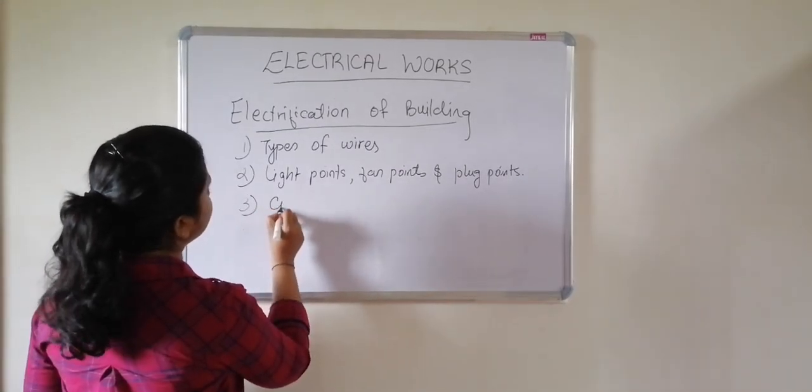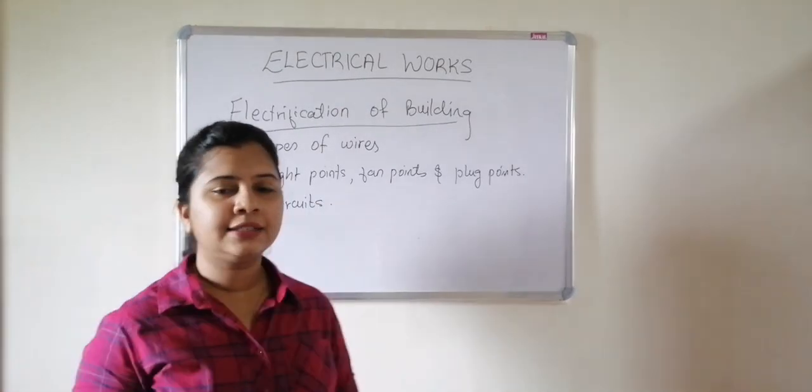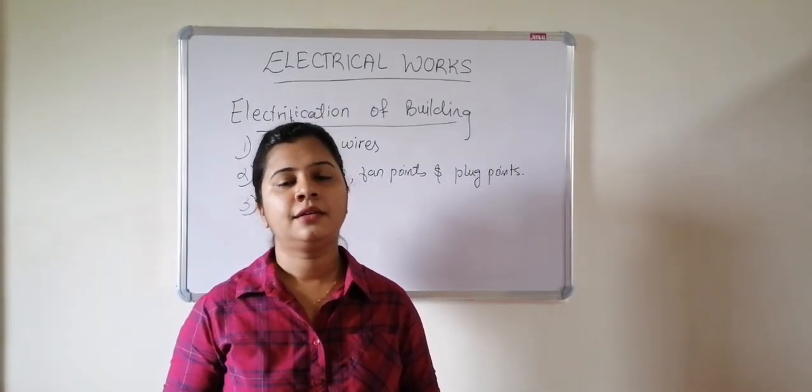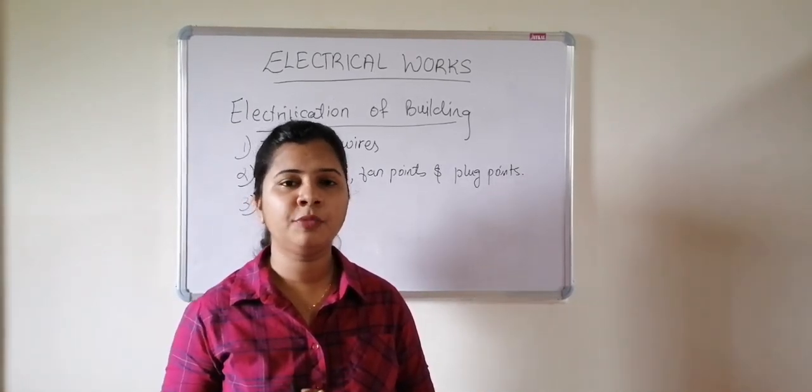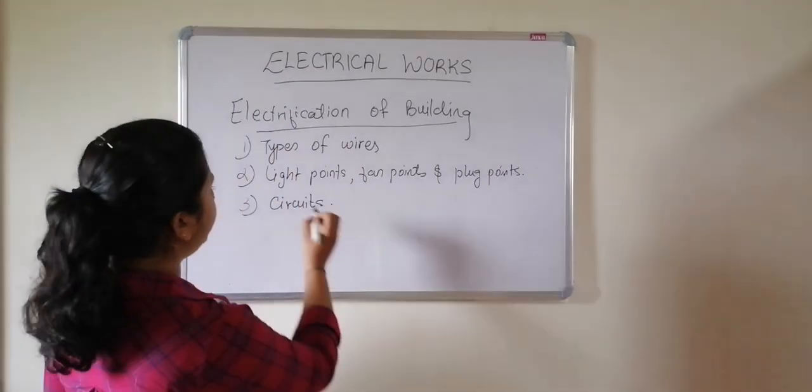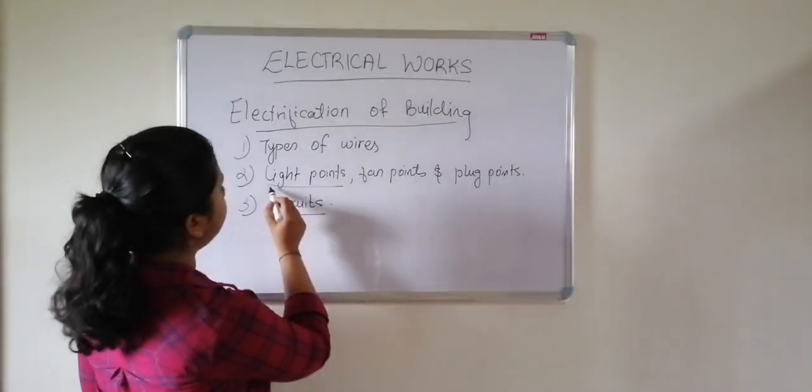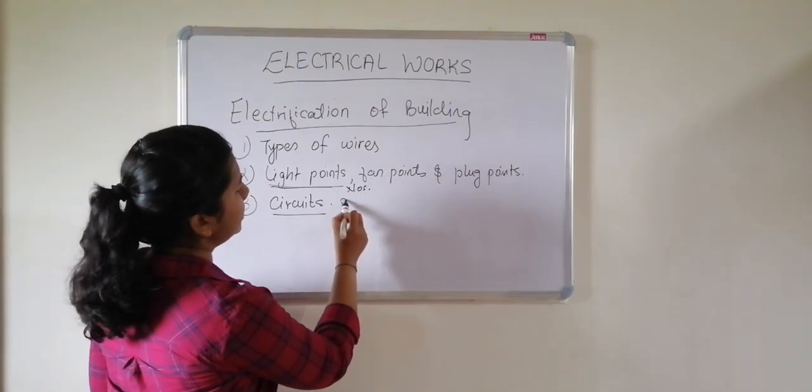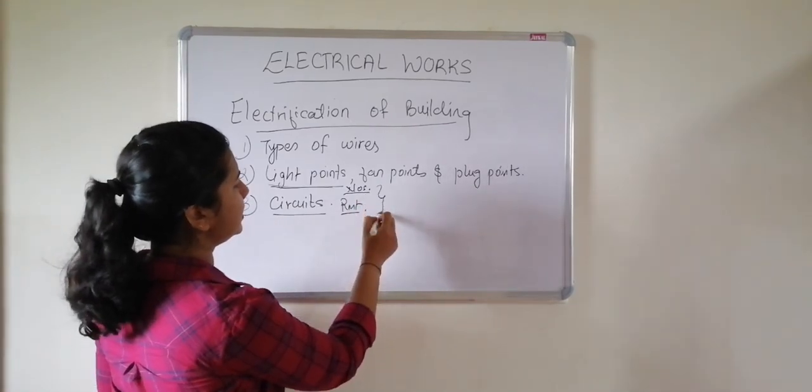Third factor is circuits. Circuit is the combination of electric current wire, neutral wire, and earthing wire. You should have an idea of where these circuits are provided and how many circuits are provided. Light points are measured separately and circuits are measured separately. Light points are calculated in numbers and circuits are calculated in running meter.